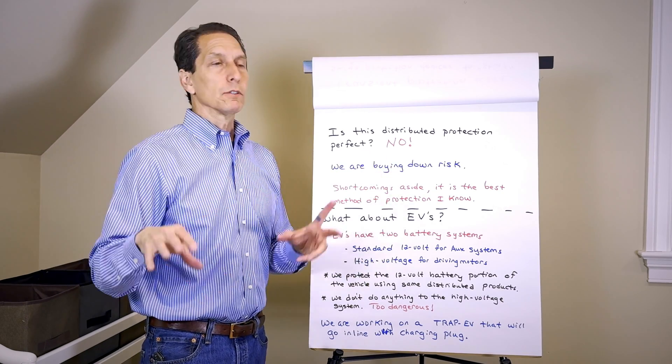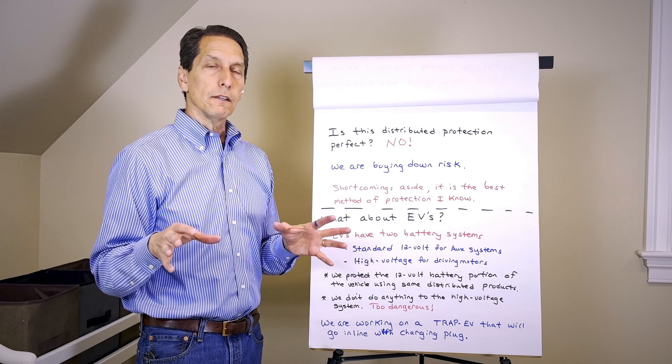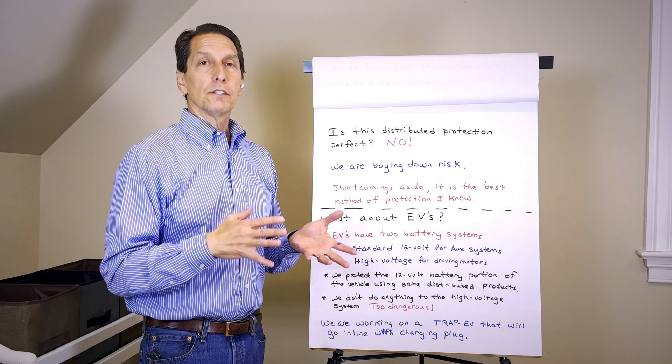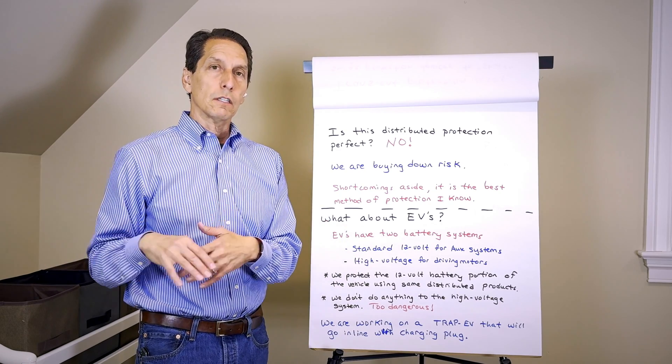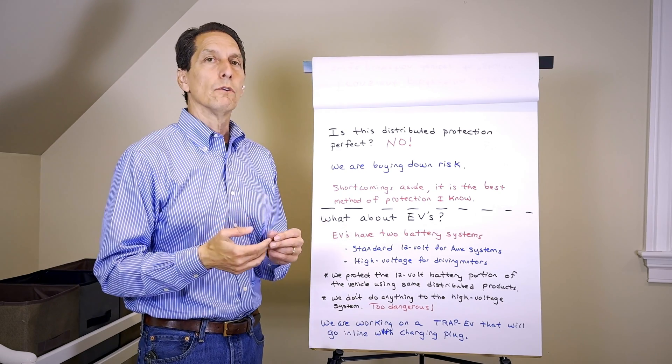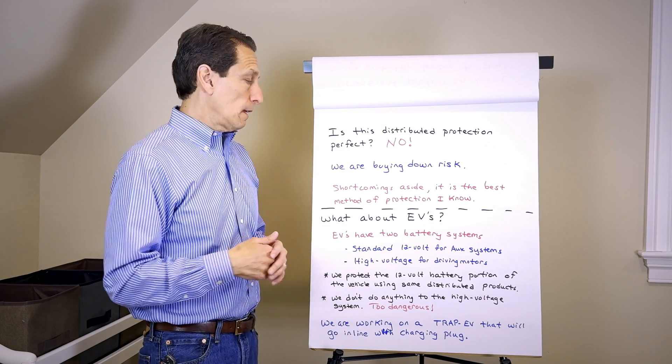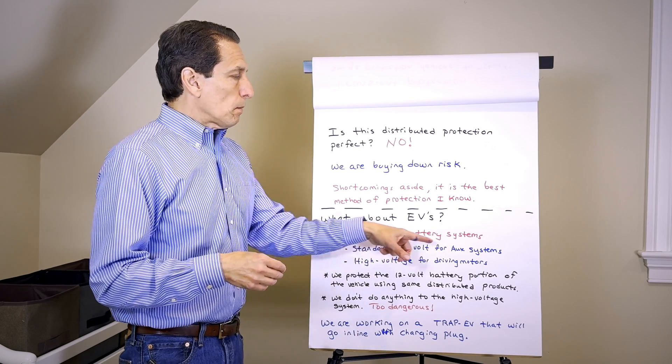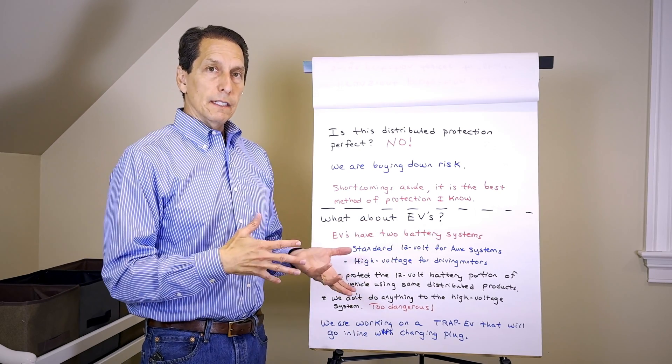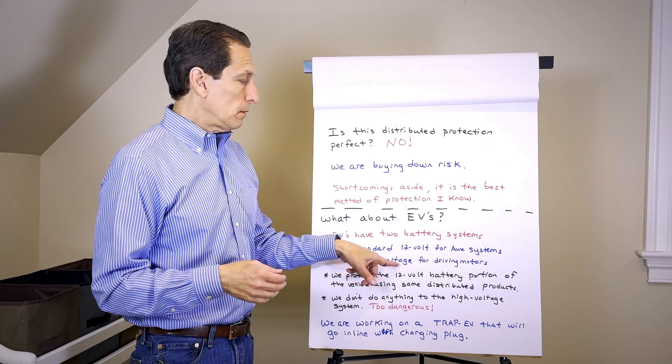But what we do know is EVs typically have two battery systems: they have a 12-volt battery system that powers computers and radios and everything else—it's essentially the same as a standard car—so you can use all of the same protections we just talked about, the traps and the Defcon Vehicle and shielding to try and protect your system from that. So the normal protections still apply to EVs.